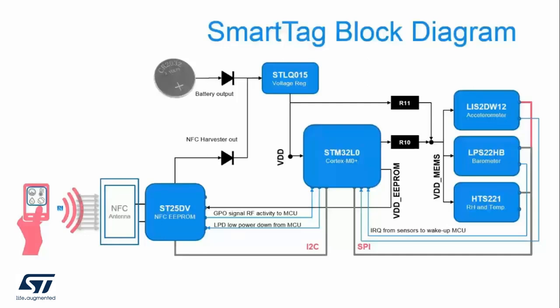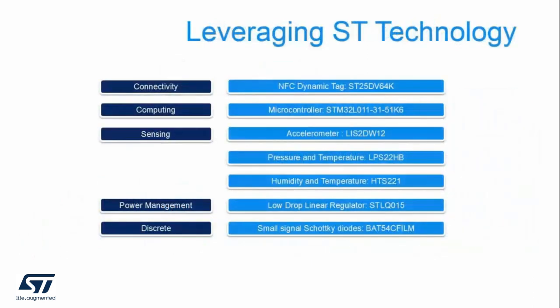The STM32 microcontroller communicates with the sensor group via SPI bus. On the other hand, it communicates with the ST25DV using the I2C bus. The NFC sensor tag IC utilizes ST technology in connectivity, computing, sensing, power management, and discrete.